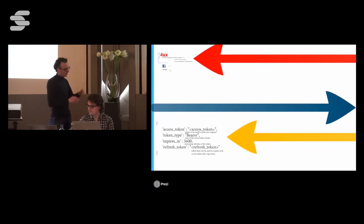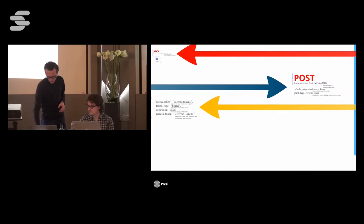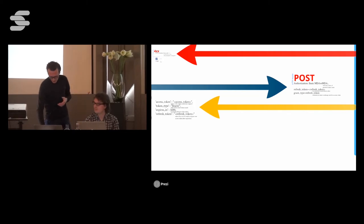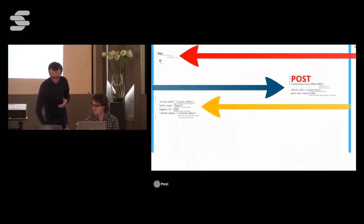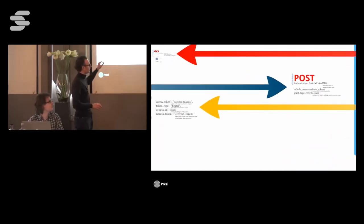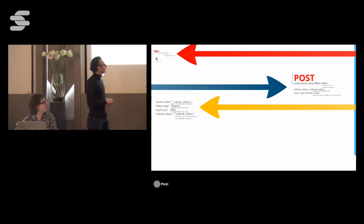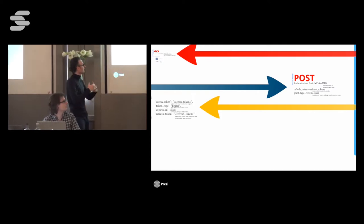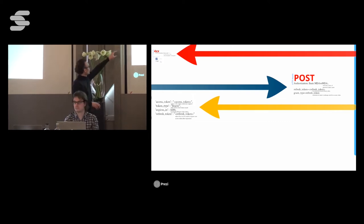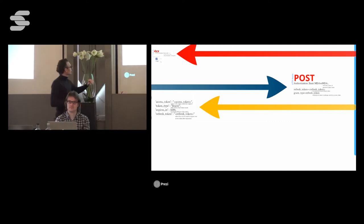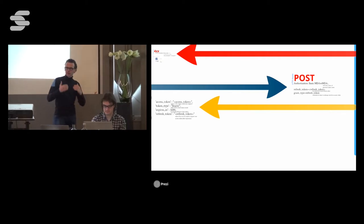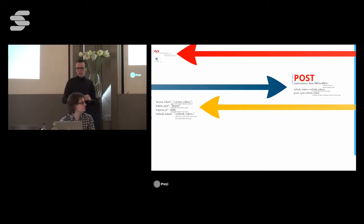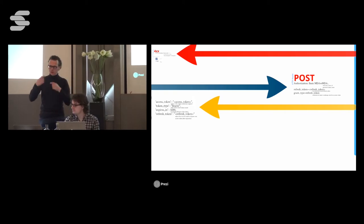When you have a problem with your access code, you can renew your access token when it's expired using your refresh token, stored server-side. You issue a POST to the authorization server with your refresh token and grant type 'refresh_token', and get back a new access token that again expires. Depending on the implementation, you also receive a new refresh token that you must store permanently server-side. It's also good practice to expire your refresh token with every access token request, otherwise the refresh token becomes a very interesting attack surface.